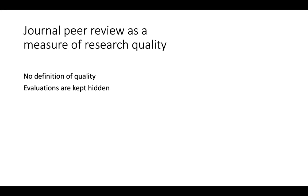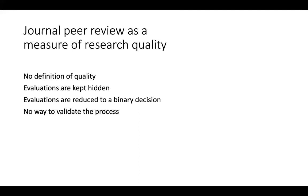All of that is reduced to a binary decision — we don't know if a paper was accepted because the reviewers thought it was very exciting, very incremental but solid, or had a lot of applied or theoretical value. All the information about which aspects reviewers and editors thought were good is lost. Because that information isn't visible to readers, there's no accountability and no way to validate the process. We're supposed to trust that journals have some definition of quality, implement it well, and make well-calibrated decisions.